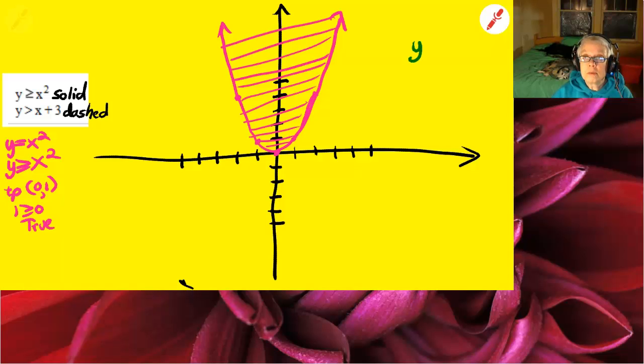There we go. Now I'm going to graph y is greater than x plus 3. The dashed line will be the line y equals x plus 3. And there I go, drawing the line.